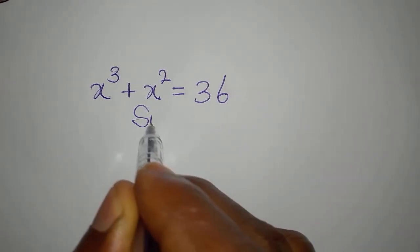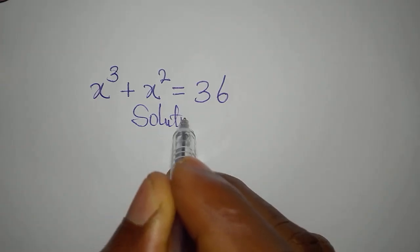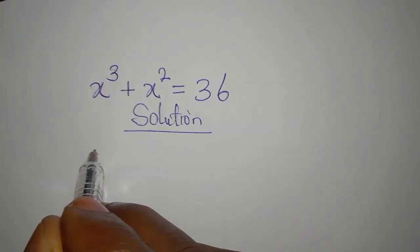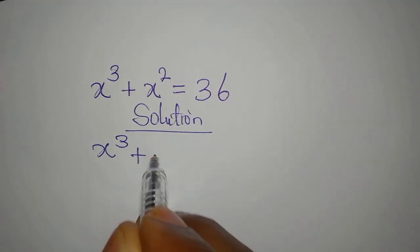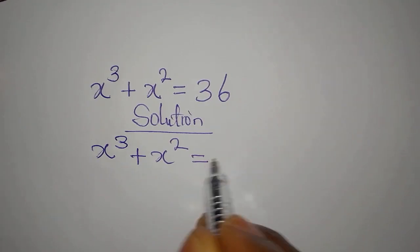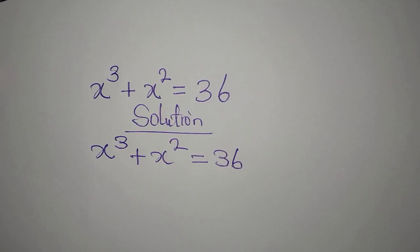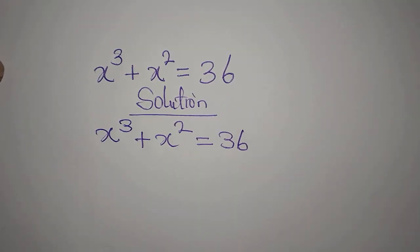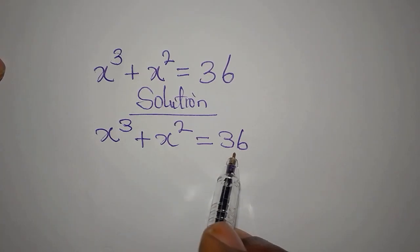Hi everyone. Let's provide a solution to x to the power of 3 plus x to the power of 2 equals 36. How do we deal with this?